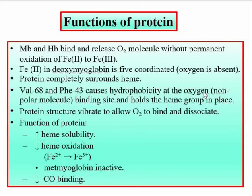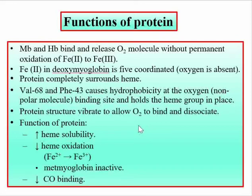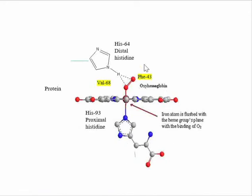Globin creates a hydrophobic environment around the heme group so that non-polar molecules like oxygen can bind. It also decreases oxidation of the iron center from Fe2+ to Fe3+, because Fe3+ cannot bind oxygen. If Fe2+ is permanently converted to Fe3+, myoglobin and hemoglobin would no longer be functional since the active center requires Fe2+.